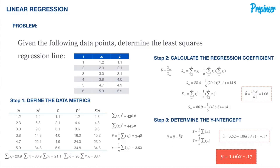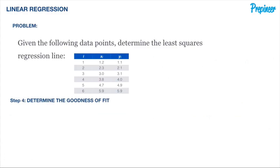Therefore, the least squares regression line is given by the equation Y = 1.06X − 0.17. But we need to take this one more step and verify whether this equation is even a legitimate representation of our data, so let's determine the goodness of fit.